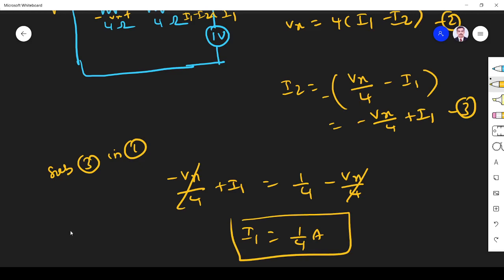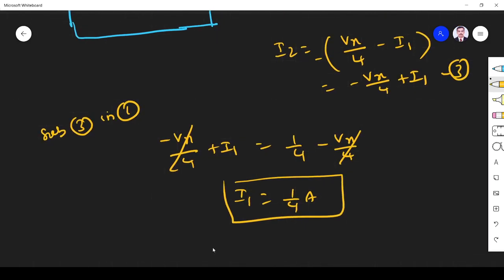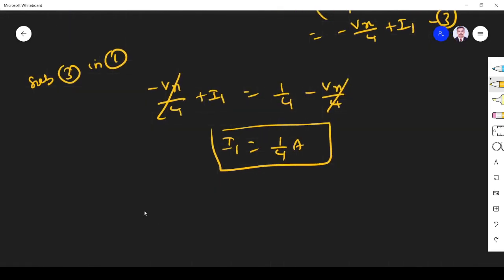Now R-thevenin is nothing but... In order to find R-thevenin, the condition is R-thevenin must be equal to V by this I1. So V is nothing but the voltage value of the voltage source that we replace with RL. So we substituted 1 volt. So 1.